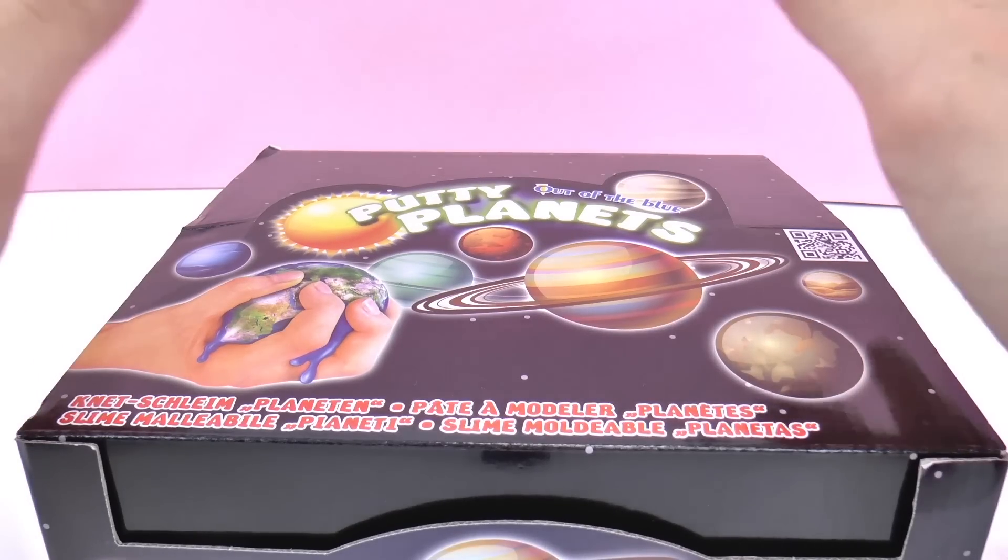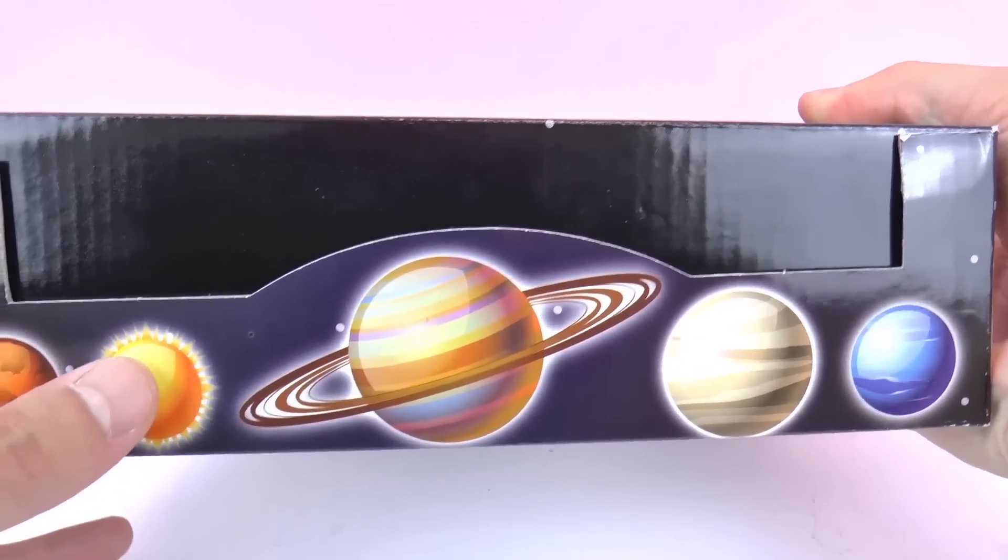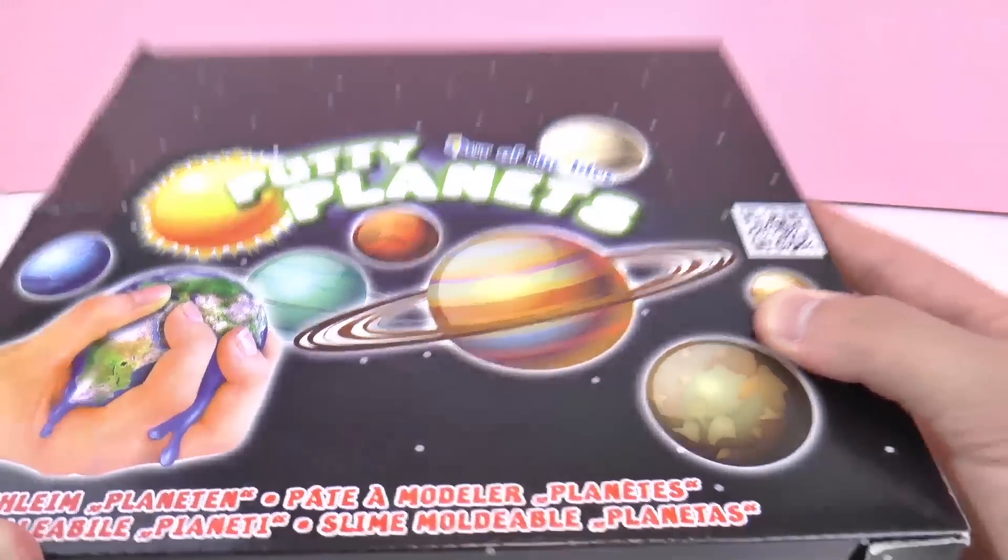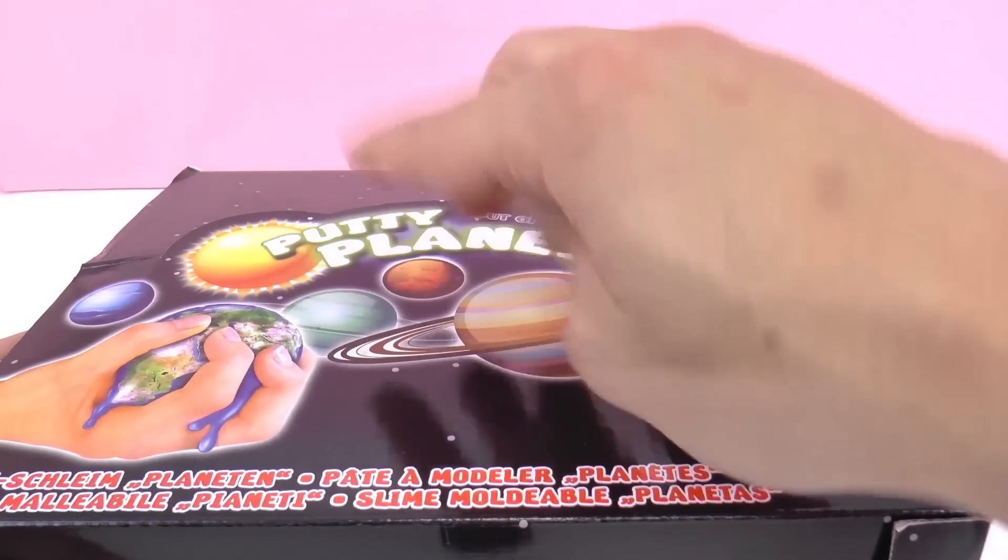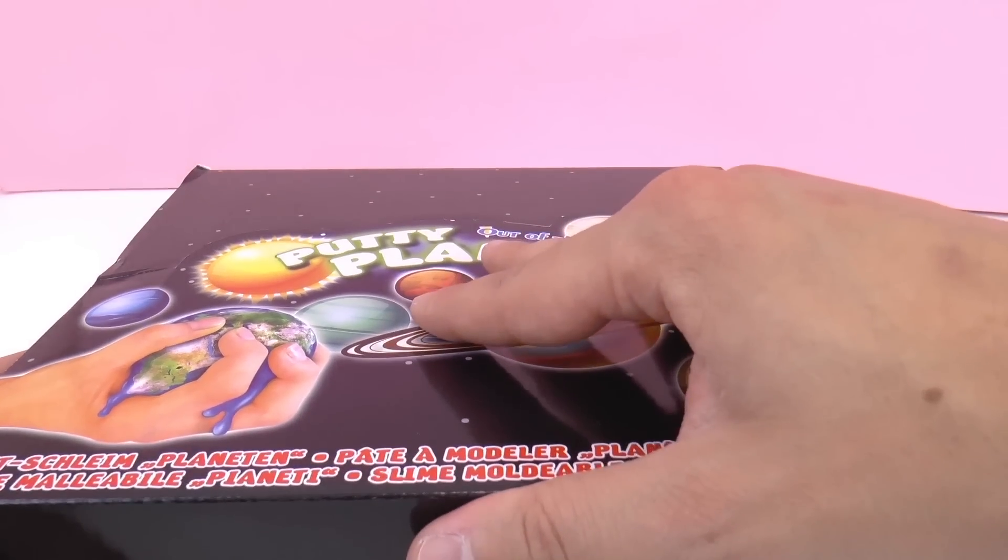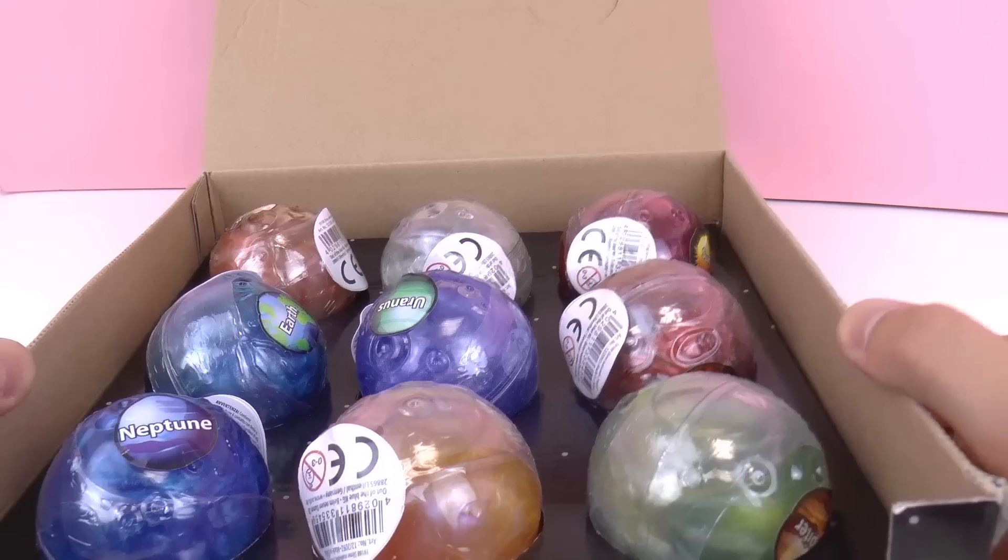I love the solar system, I think it's really fun, so I'm excited to see what this slime is like. There are nine planets included and I think Pluto is also included, although Pluto is sadly no longer a planet, which is super upsetting because it was my favorite planet, but it's actually smaller than our moon. Pretty crazy, right?